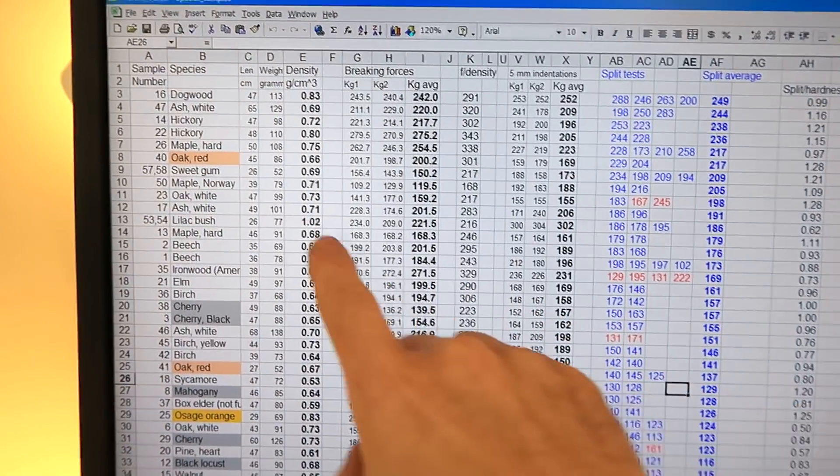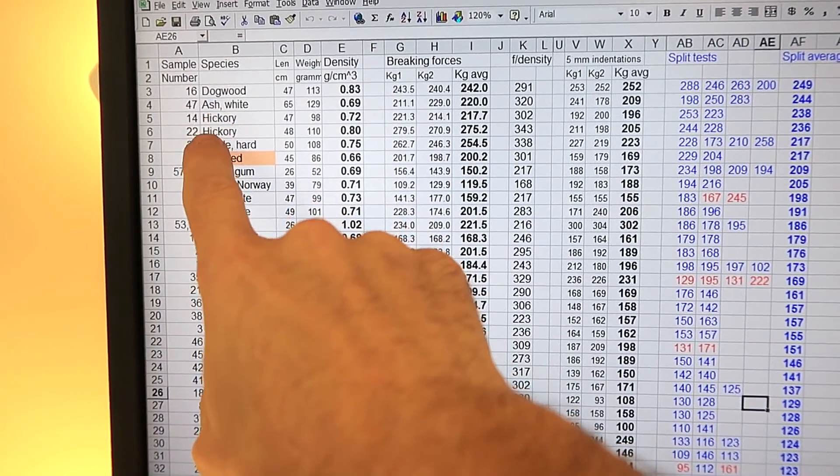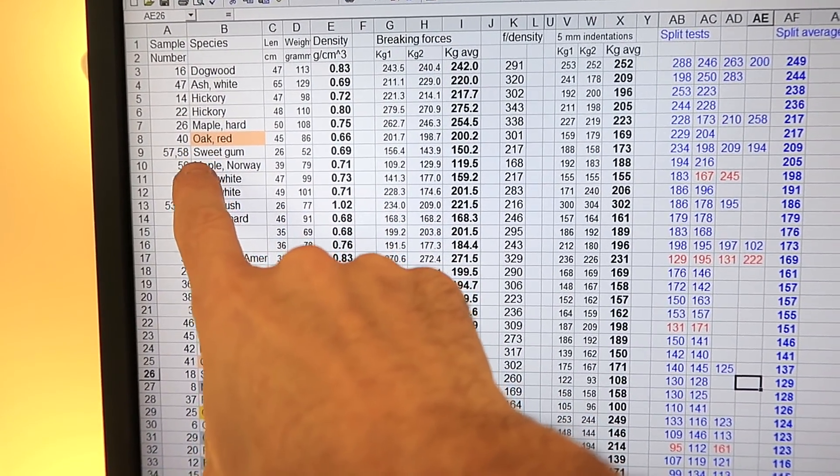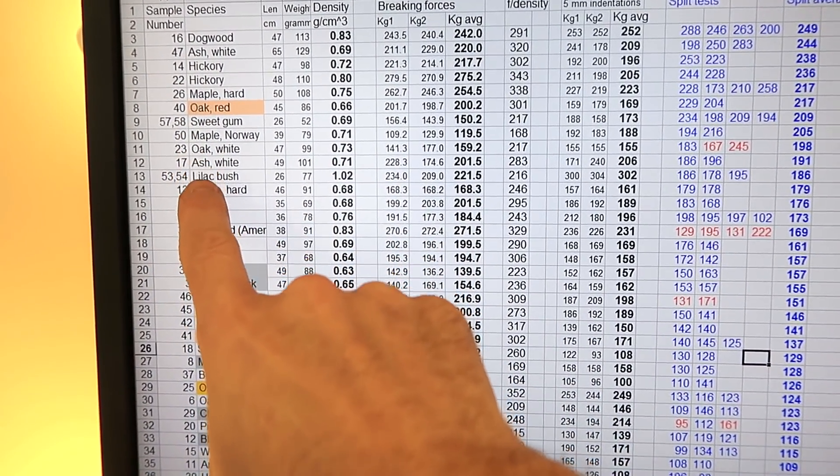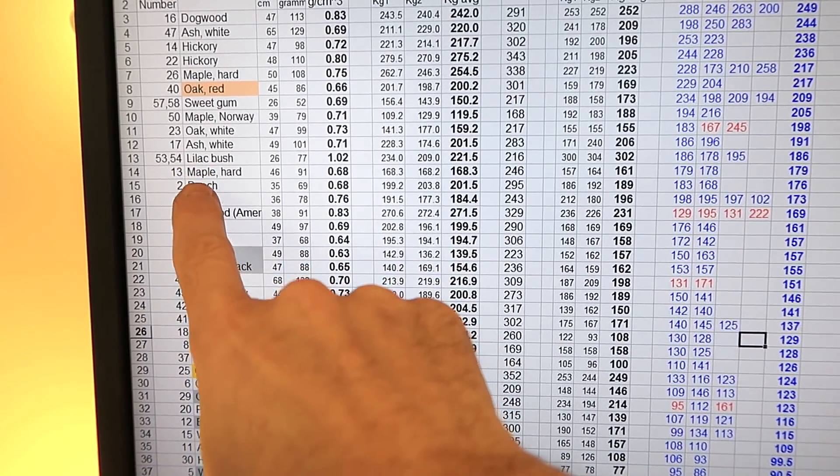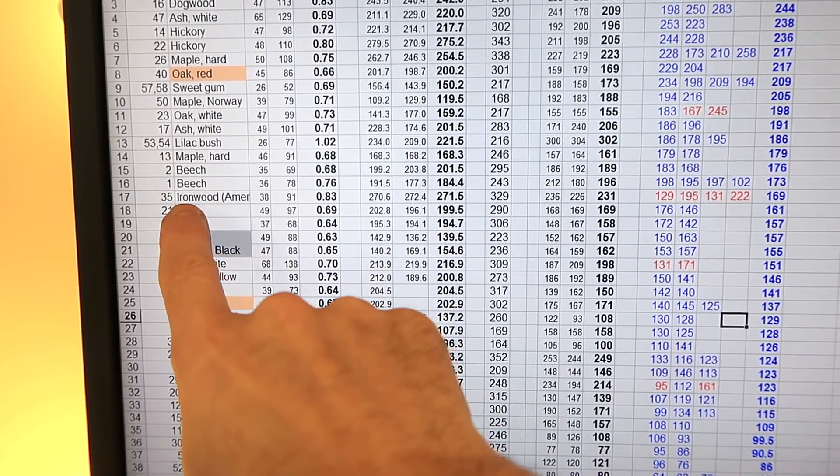Sorted highest to lowest and at the top is dogwood, then white ash, hickory, hard maple, oak, sweet gum, norway maple, oak, white ash again, lilac bush, hard maple, beech, ironwood.